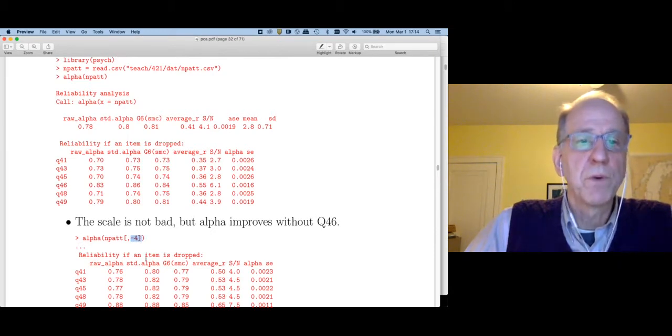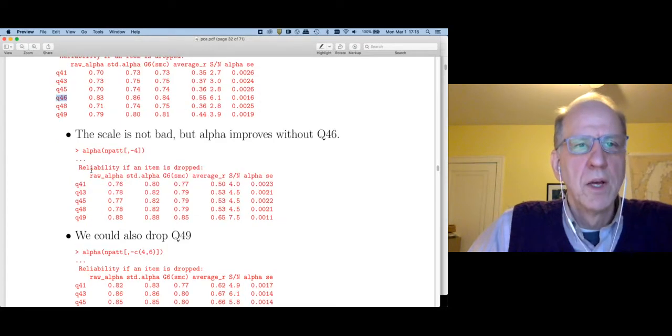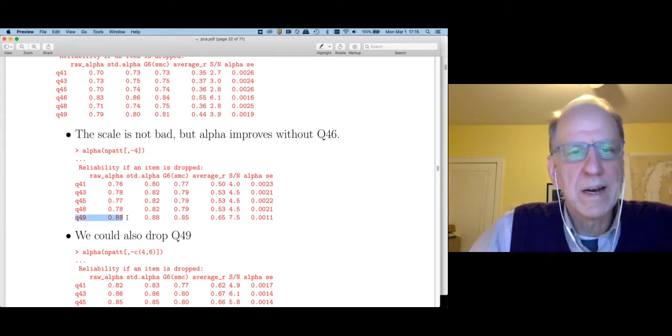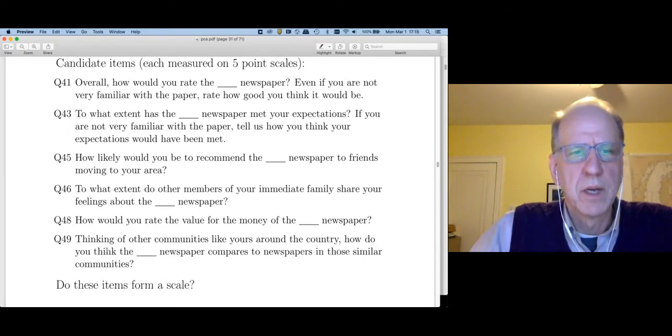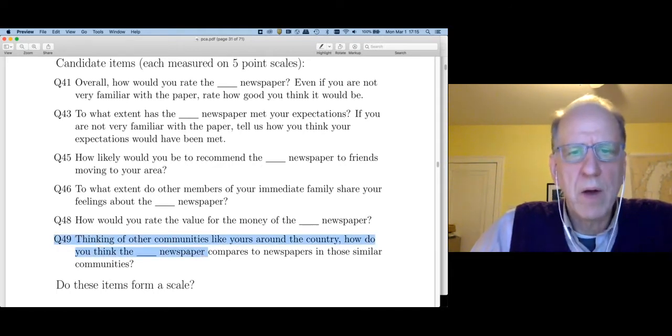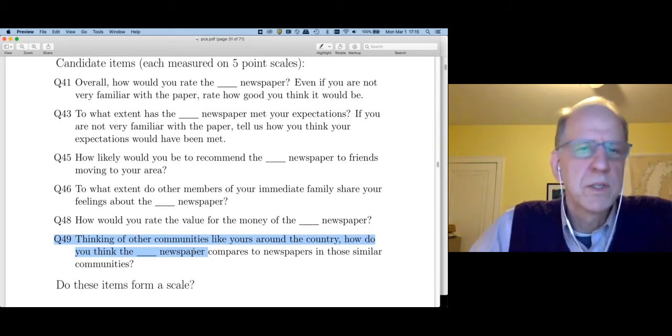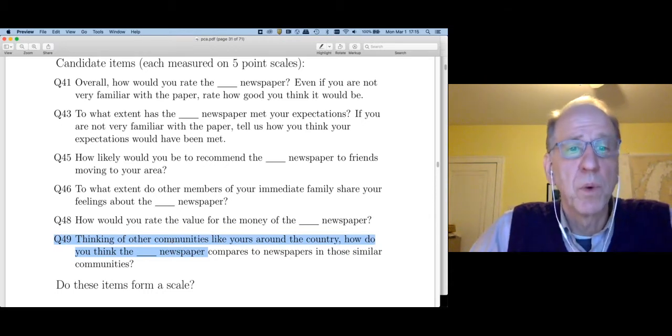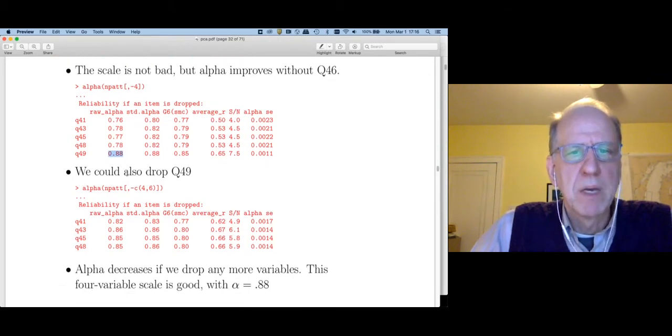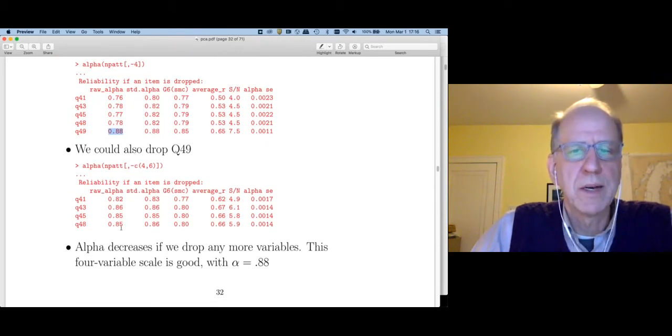So let's go do that. So I've just gotten rid of the fourth question, namely question 46. So notice my starting alpha is going to be 0.83 in this case. And if we get rid of question 49, alpha goes up to 0.88. So let's go look at the item and think about whether this is measuring something in the construct domain. So this is measuring how I think this paper compares with other papers in similar communities. That's not a real direct measure of my attitude towards this paper. And so I think we can make a case for dropping this as well. So now my alpha is 0.88. If I try to drop anything else, we see that alpha goes down. And therefore, the four questions I have left are probably pretty good scale with alpha equal to 0.88.